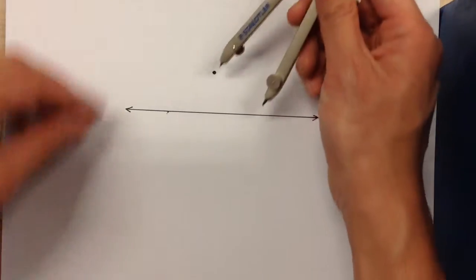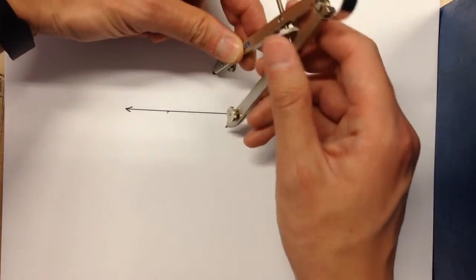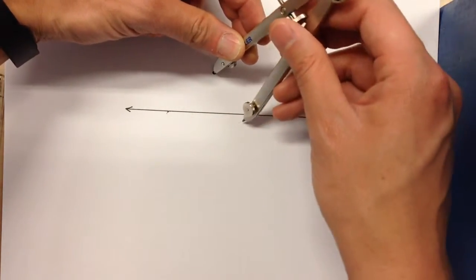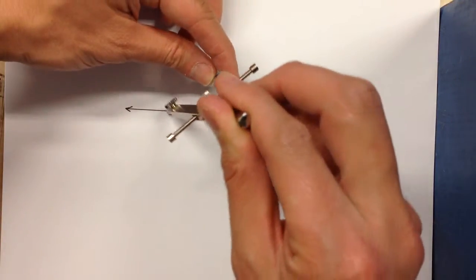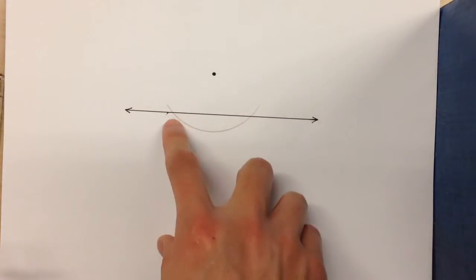So the trick is, set up your compass so that it will swing an arc in two places on your line from that original point. So, there. See how it hits the line there and there?